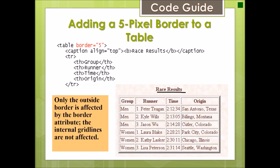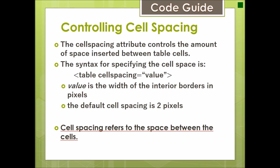Only the outside border is affected by the border attribute; internal grid lines are not affected. Now, controlling cell spacing: cell spacing is the space between two table cells. The syntax is table cellspacing equal to value, where value is the width of interior borders in pixels. The default cell spacing is two pixels.